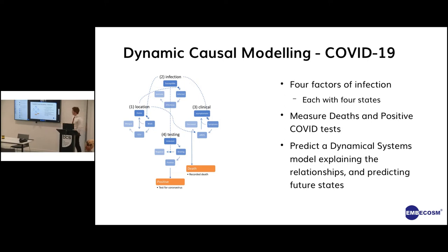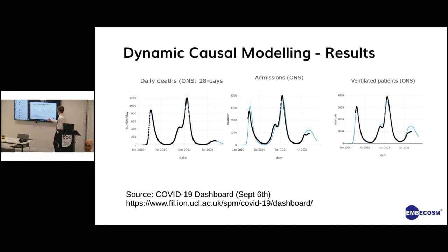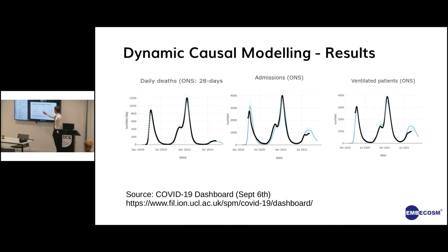The end result looks like this, which illustrates an interesting point. We feed the model the number of deaths — black dots here indicate observed data, blue lines indicate predictions from the model — and the model does quite a good job of predicting the number of observed deaths. What's very interesting is that as part of our plausible dynamical systems we specified that admissions and ventilated patients are part of those systems, and the model has actually done quite a good job of inferring the number of hospital admissions and number of ventilated patients — really important statistics — without actually having directly observed them.